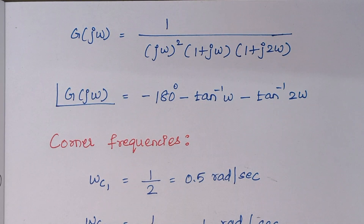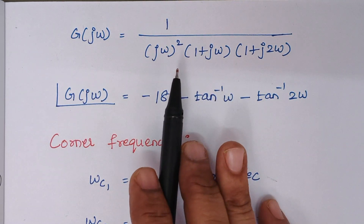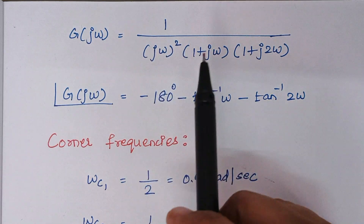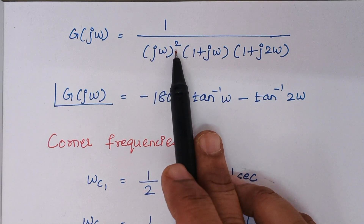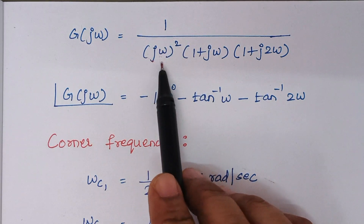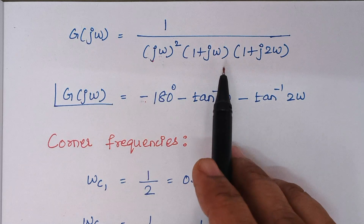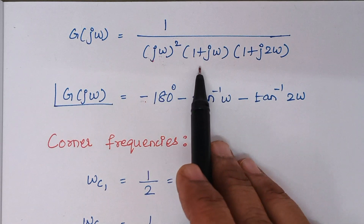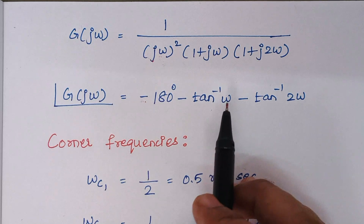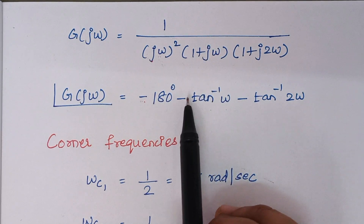Now we write the expression for phase angle. As we already know, ω contributes an angle of 90 degrees. ω squared contributes an angle of 180 degrees (2 into 90 is 180). Since this lies in the denominator, I am moving it to the numerator, so I include a minus sign. Then for the expression (1 plus jω), tan inverse of imaginary term by real term gives tan inverse of ω by 1, which is tan inverse of ω. Since this is a denominator term, moving it to the numerator gives minus tan inverse of ω.